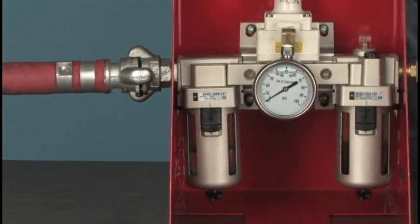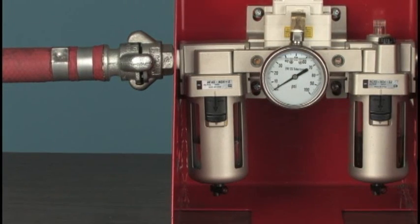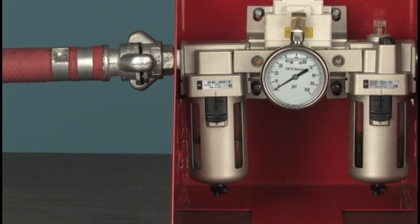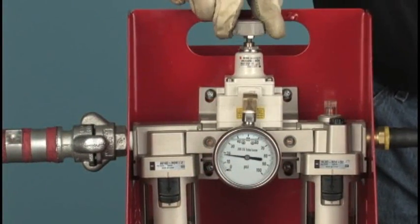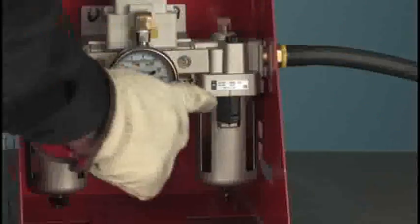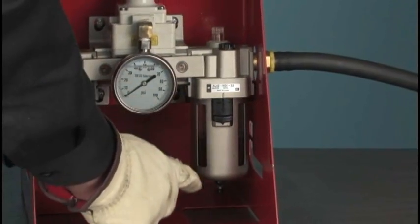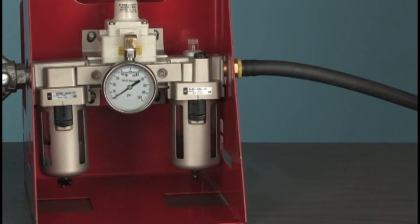The job of the filter is to remove any debris or water from the air supply. The filter can be drained as needed with the valve on the bottom. The regulator meters input air pressure accurately, controlling the torque output of the tool. The lubricator's job is to introduce a fine mist of oil into the air stream to lubricate and protect the internal parts of the tool against corrosion or damage.